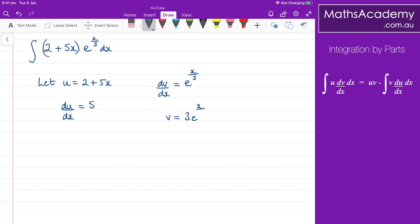Now all I need to do is plug all these into the formula. So we're looking for the integral of (2 plus 5x)e to the x over 3 with respect to x.